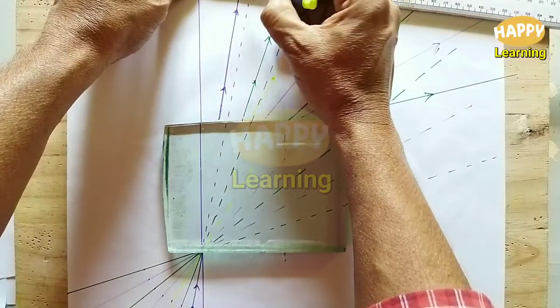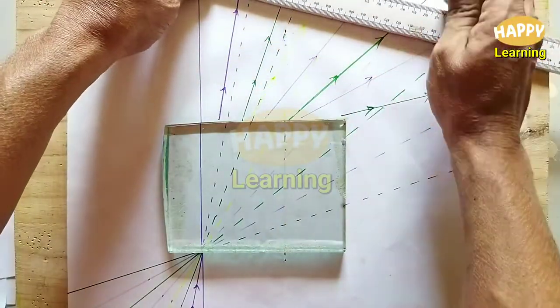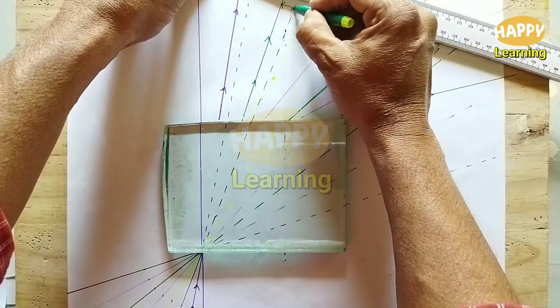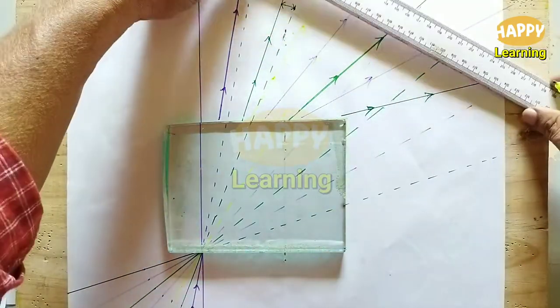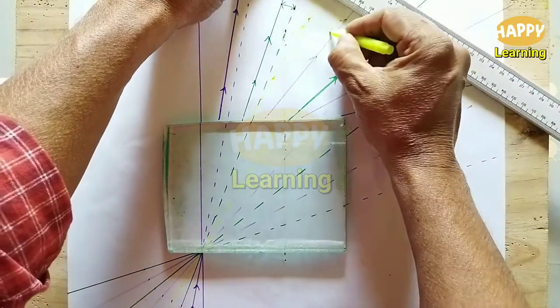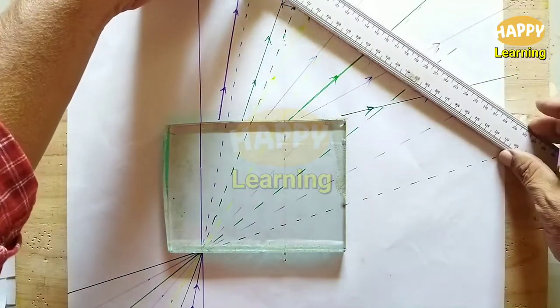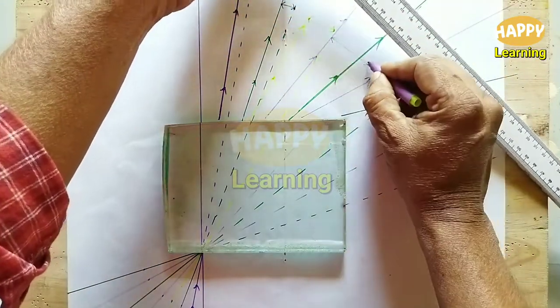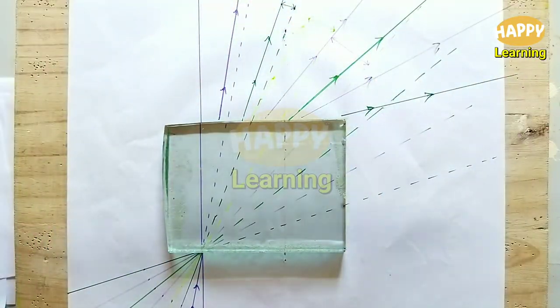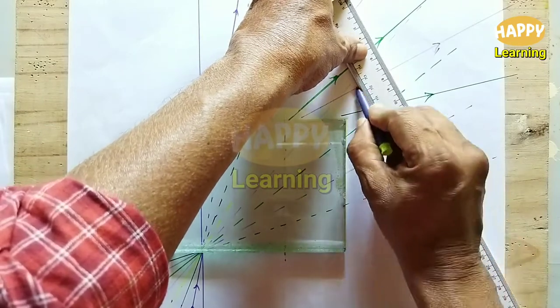We will note down the perpendicular distance between the corresponding pair of straight lines, incident ray and emergent ray. In each case we have one incident ray and one emergent ray, and the perpendicular distance between those two lines is the lateral shift.